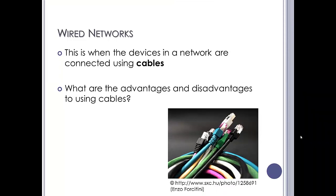Wired networks - this is when the devices on a network are connected using structured cabling. Basically, Cat5 or Cat6 cable, which looks something like the image in the bottom right here, comes in various colours. They can be used to connect printers, computers, anything that's got an RJ45 network port in it.